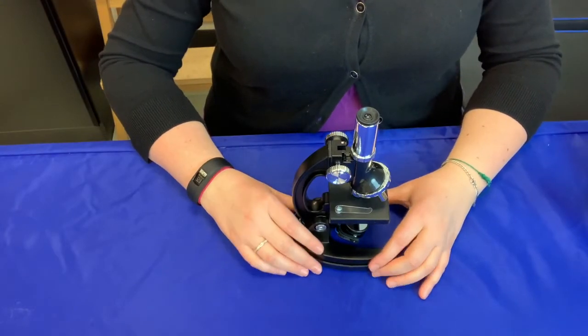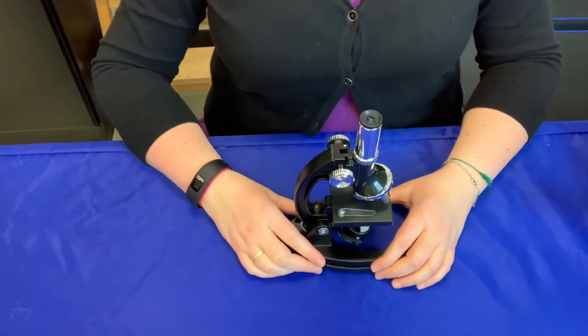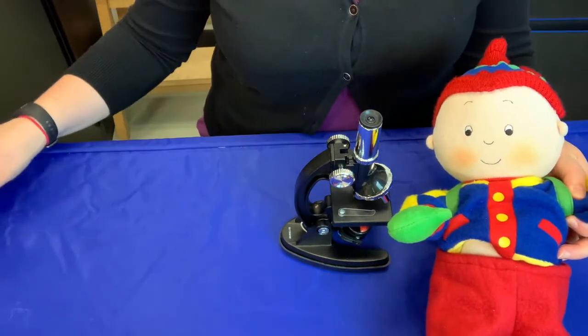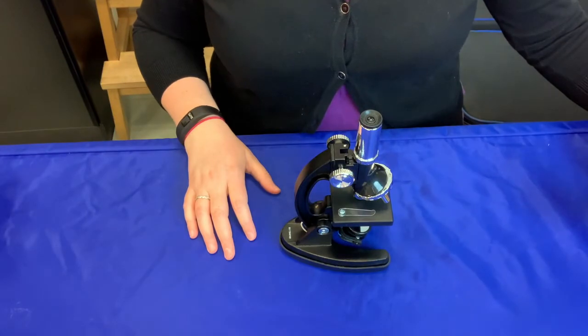Today we're going to start with some safety tips when using the microscope. First, keep small children and animals away from any samples or experiments you might be working on.